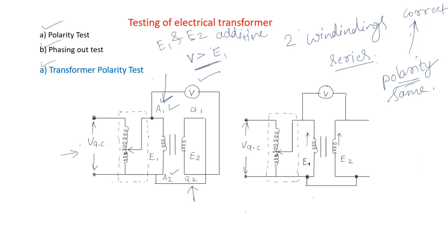In case it is not so, if we don't see this in the output, then polarity marking is not correct. So the marking of any one side has to be changed. Test is again carried out by making connection as shown in the figure.